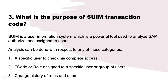What is the purpose of the SUIM transaction code? SUIM is a user information system which is a powerful tool used to analyze SAP authorizations assigned to users. Analysis can be done for a specific user to check their complete access. T-codes or roles assigned to a specific user or group of users can be analyzed using SUIM. Analysis can also be done to check the change history of roles and users.